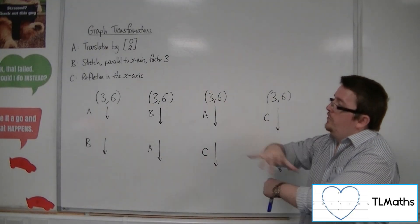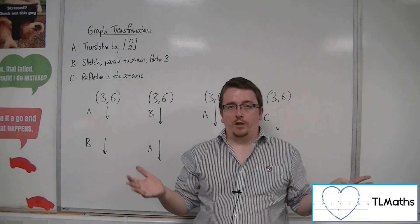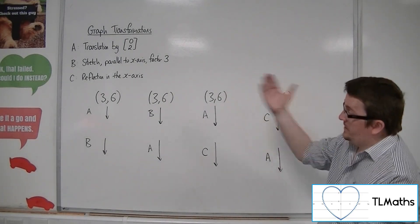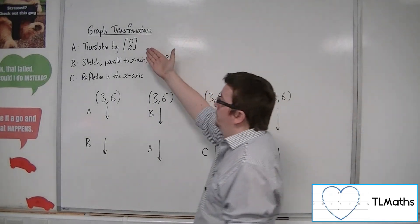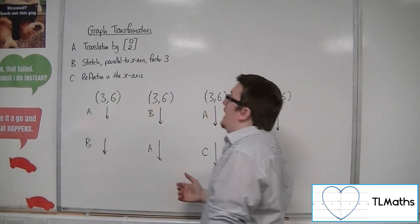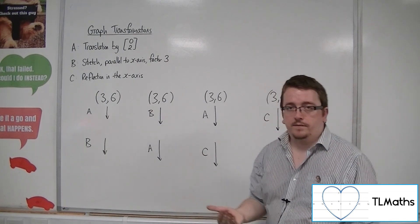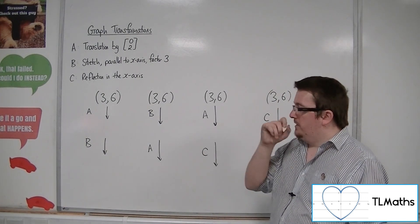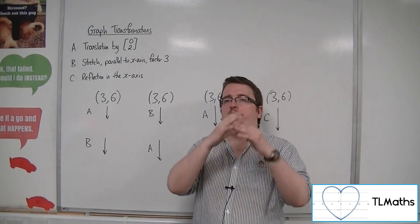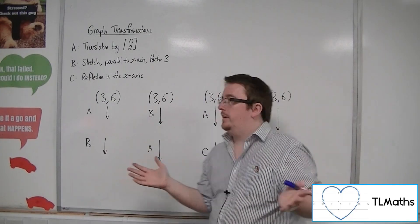Now, what I've got here are three different transformations. I've got a translation by the vector (0, 2), a stretch parallel to the x-axis factor 3, and a reflection in the x-axis. And what I'm going to do is, instead of looking at a curve, I'm just going to choose a random point.